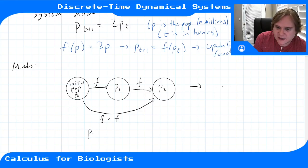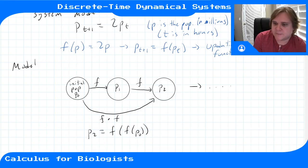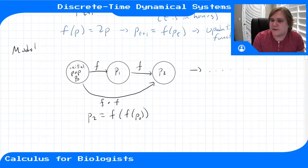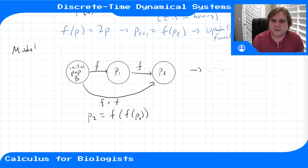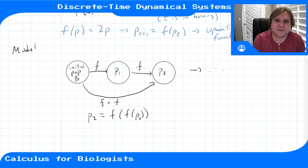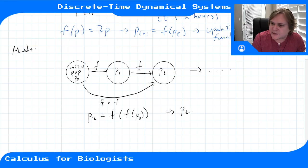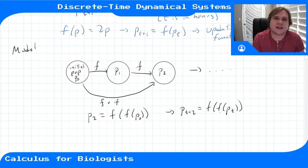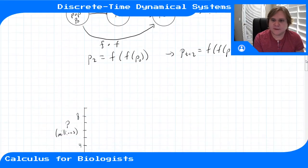So p(2) = f(f(p0)) — this function composition maps from your initial population to the population two hours later. By composing our updating function with itself over and over, we can iterate through this discrete time dynamical system. You could define a dynamical system that counts every two hours: p(t+2) = f(f(p(t))), which is just the system composed twice.